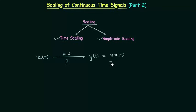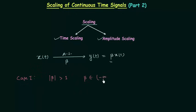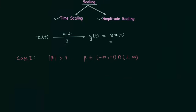Now depending on the value of β, we have two cases. In case number 1, the absolute value of β is greater than 1. Therefore, the range of β is from minus infinity to minus 1, union 1 to infinity. This is the range of β, and I will take the original signal which is defined as follows.